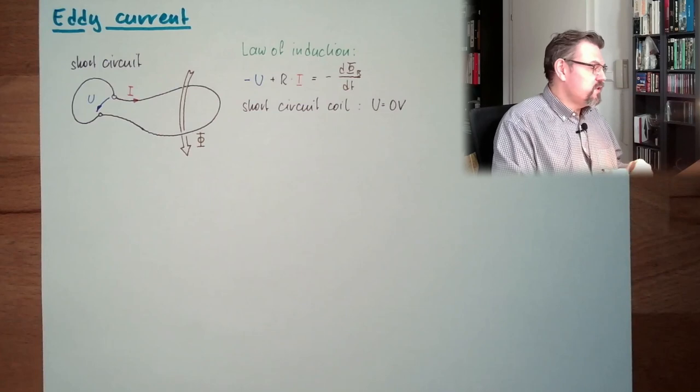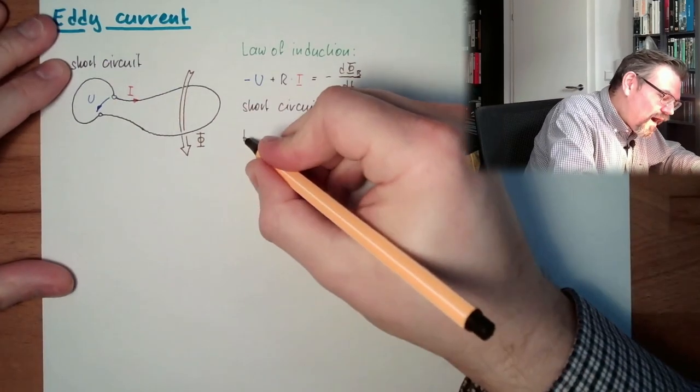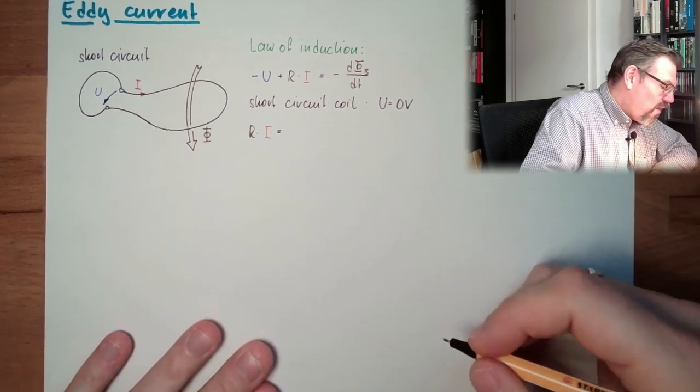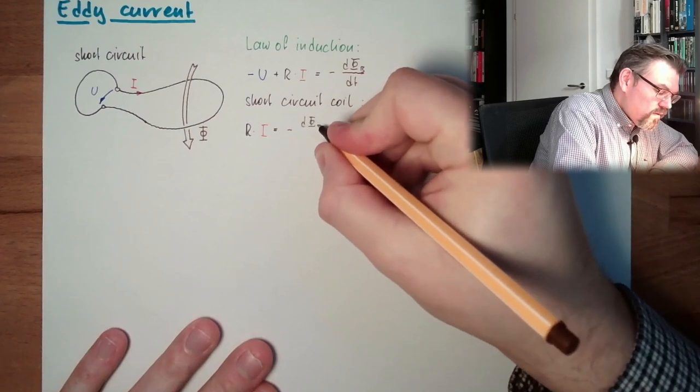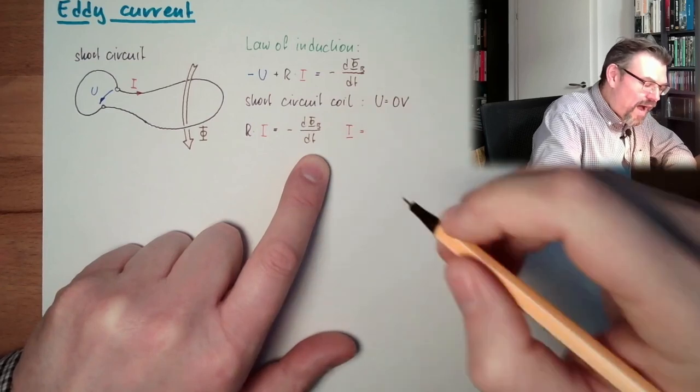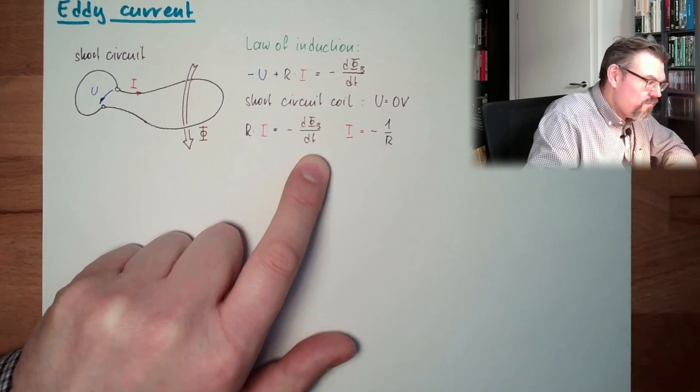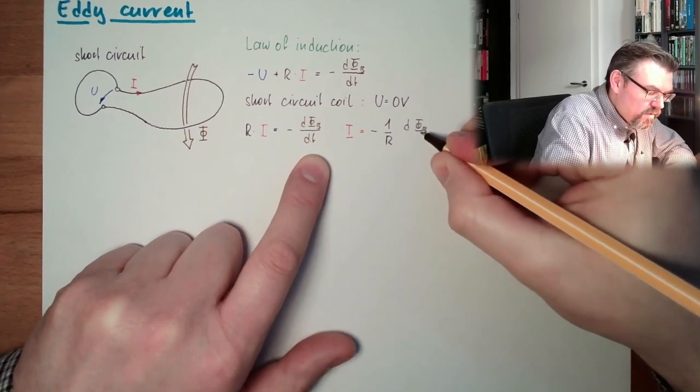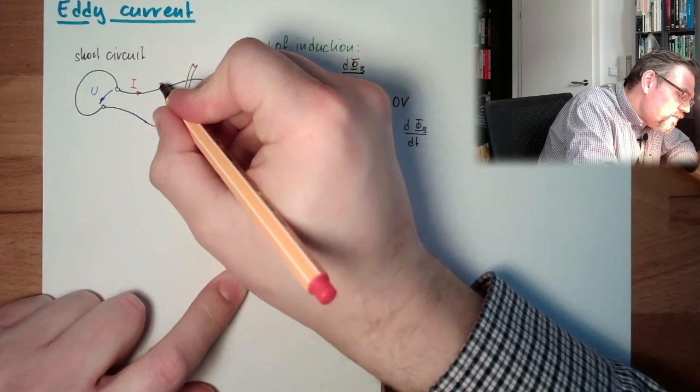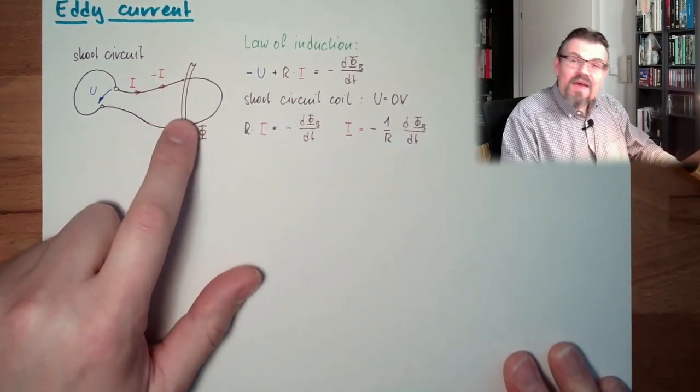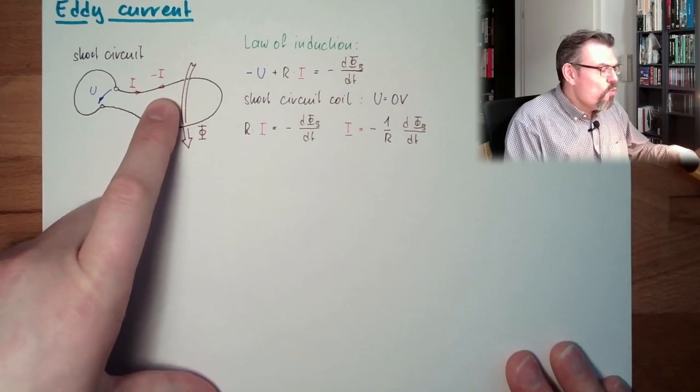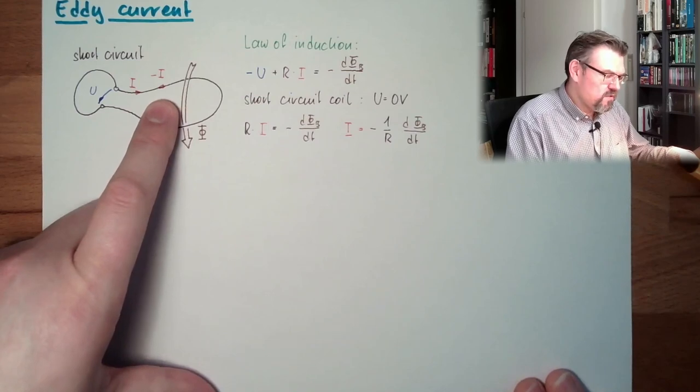Here there is no voltage anymore. So what is left from our law of induction is R times I equals the negative change rate of our flux combined. So what is I? Now I is minus 1 divided by R multiplied by the change rate of the combined flux. So it is negative. So actually it is going in this direction. Minus I. That is minus I.